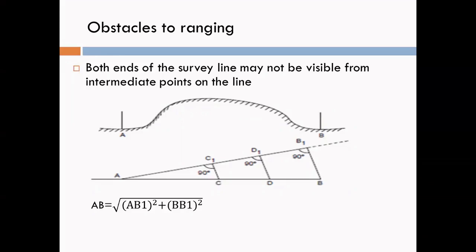Both ends of the survey line may not be visible from intermediate points on the line. See in figure. Consider point A and point B on the ground. A is our starting point, B is our ending point, and AB is our survey line. We have to measure the length of line AB.